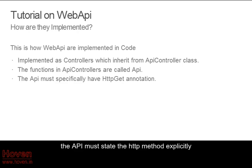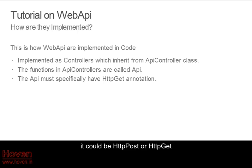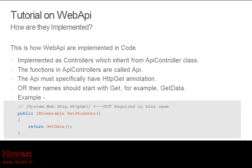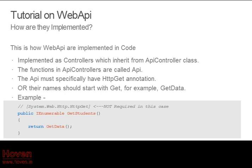The API must state the HTTP method explicitly — it could be HTTP POST or HTTP GET. Names that start with GET are deemed marked HTTP GET, so for example there is no need to explicitly mark HTTP GET in that case.